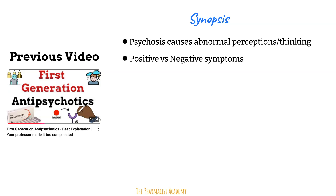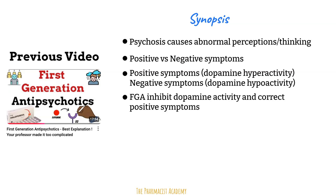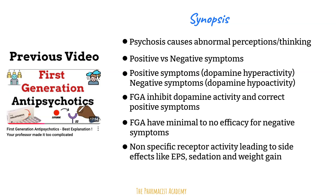As per the dopamine hypothesis, the positive symptoms are due to the hyperactivity of dopamine in the brain, while the negative symptoms are due to the hypoactivity of dopamine in the brain. The first generation antipsychotics work by inhibiting dopamine activity in the brain. This takes care of the positive symptoms by reducing the hyperactivity, but has minimal to no efficacy against negative symptoms. First generation antipsychotics interact with dopamine receptors in other areas of the brain not responsible for the psychosis, leading to side effects like extrapyramidal symptoms, sedation, weight gain, and dry mouth.